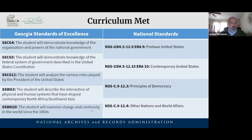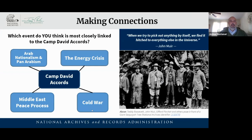We have the Georgia Standards of Excellence listed, as well as national standards. Overlapping this topic of the Camp David Accords, we have to talk about Arab nationalism and Pan-Arabism — going back from World War I and World War II — the energy crisis, something preceding Carter's time in office that would outlast it, the Middle East peace process, which is still happening today, and then again the Cold War.